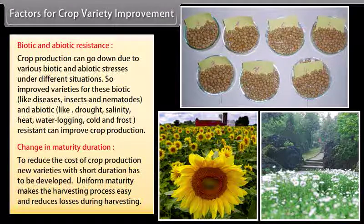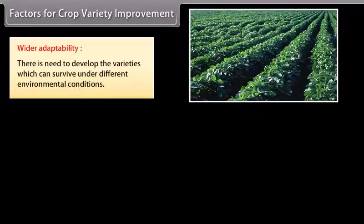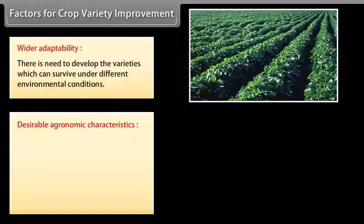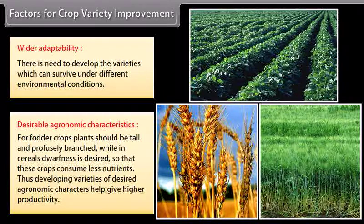Change in maturity duration — to reduce the cost of crop production, new varieties with short duration need to be developed. Uniform maturity makes the harvesting process easy and reduces losses. Wider adaptability — there is need to develop varieties which can survive under different environmental conditions. Desirable agronomic characteristics — for fodder crops, plants should be tall and profusely branched, while in cereals, dwarfness is desired so that crops consume less nutrients, giving higher productivity.